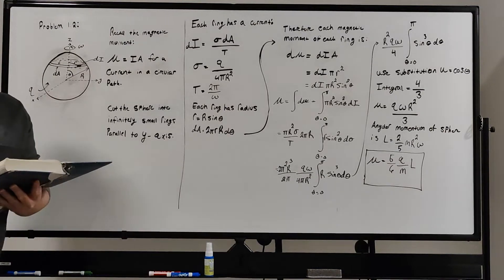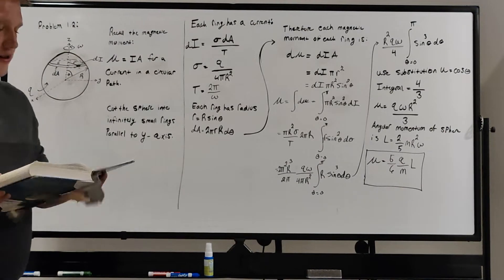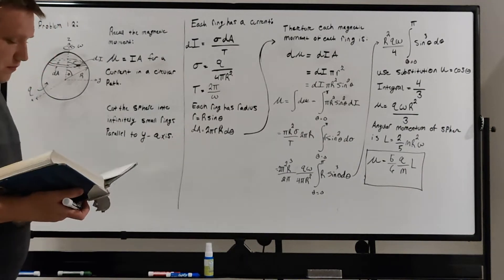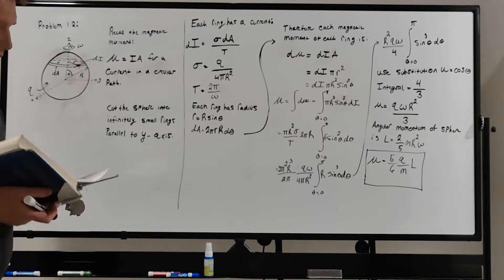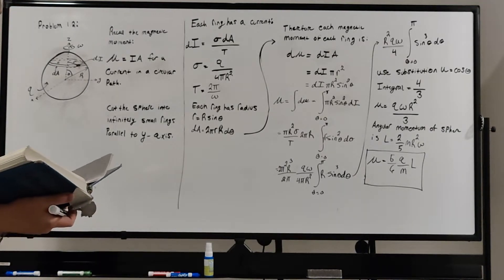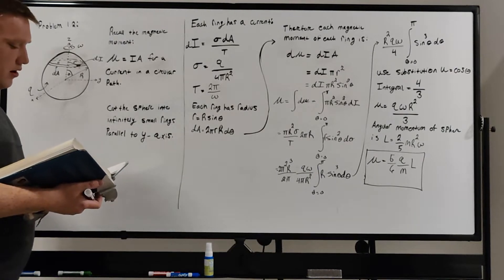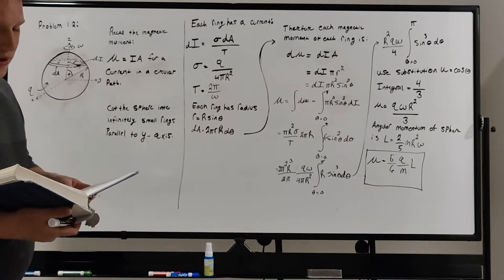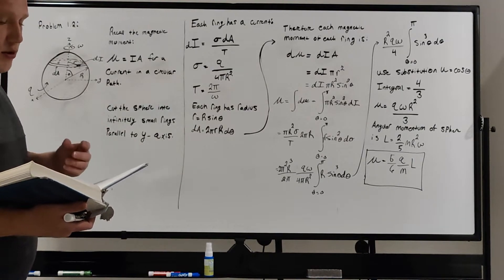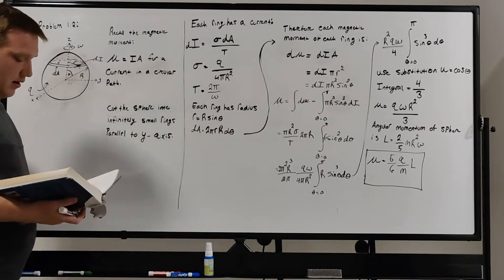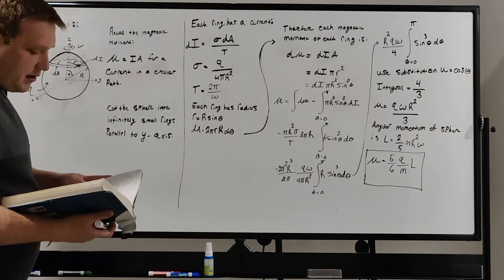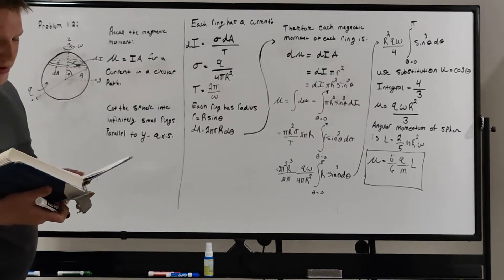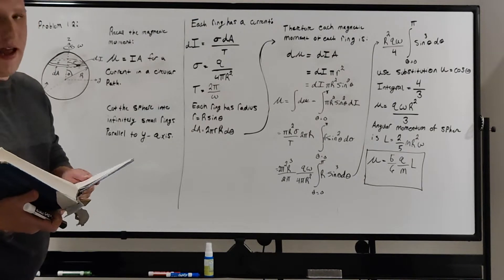Hello, everyone. Welcome to problem 1.2 of Townsend's A Modern Approach to Quantum Mechanics. For this problem, it says to show that for a solid spherical ball of mass M rotating about an axis through its center with a charge Q uniformly distributed on the surface of the ball, that the magnetic moment mu is related to the angular momentum L by the relation mu equals 5Q over 6MC times the angular momentum L.